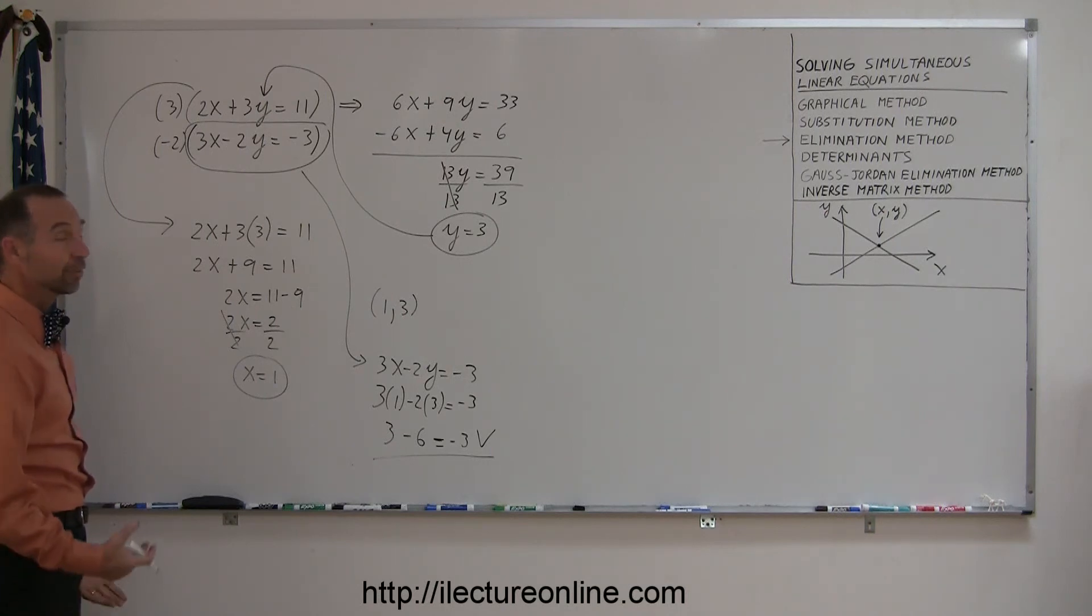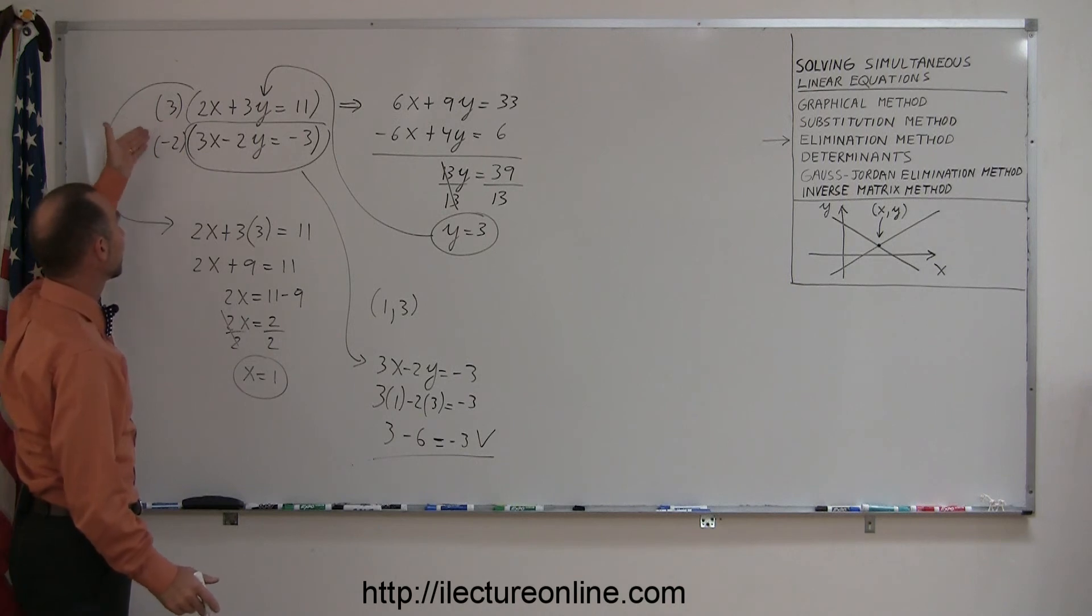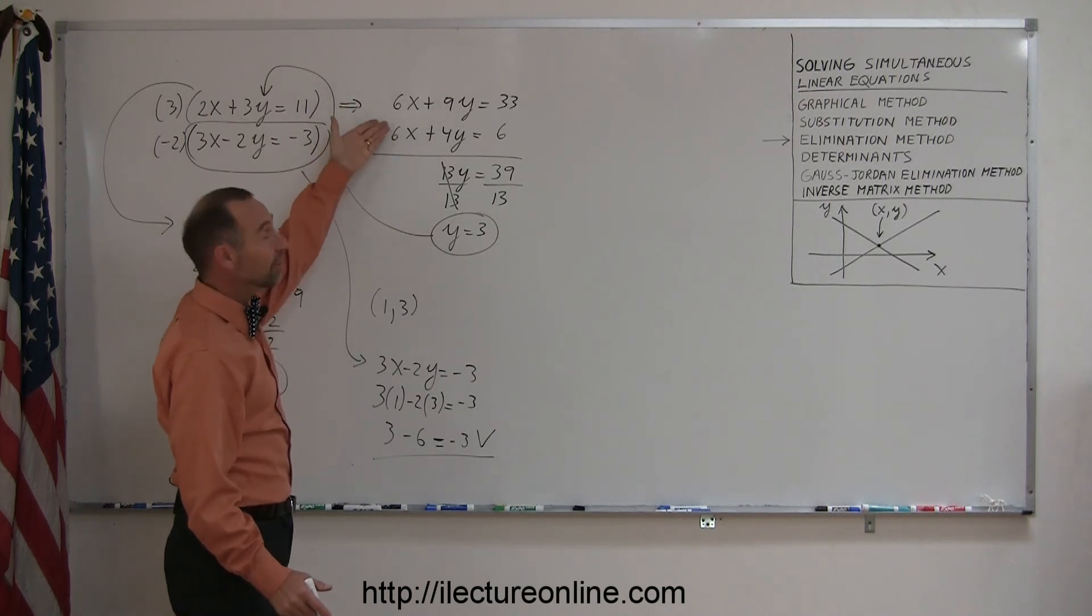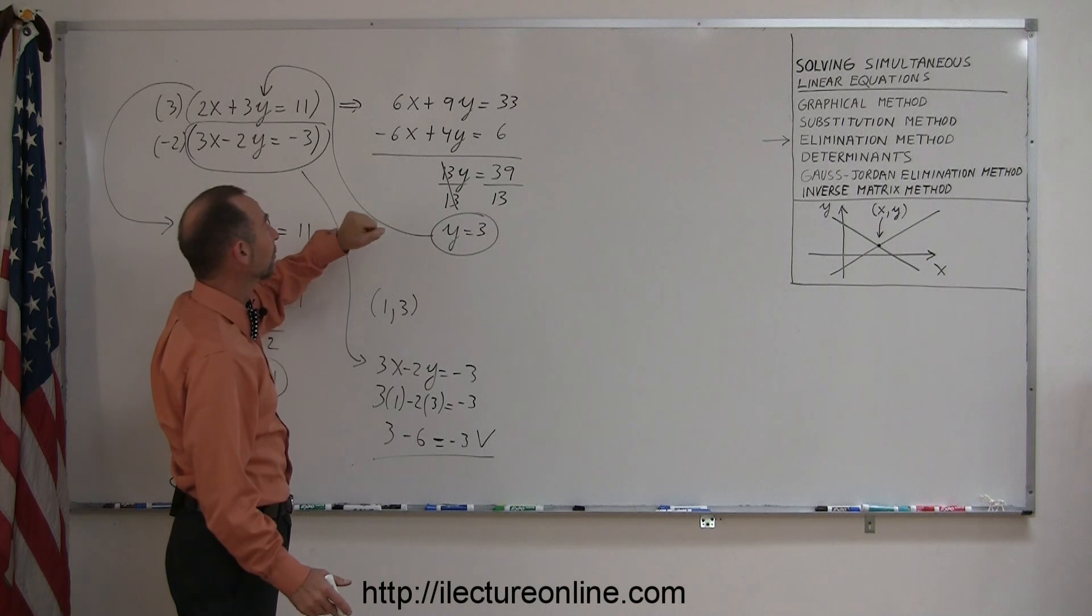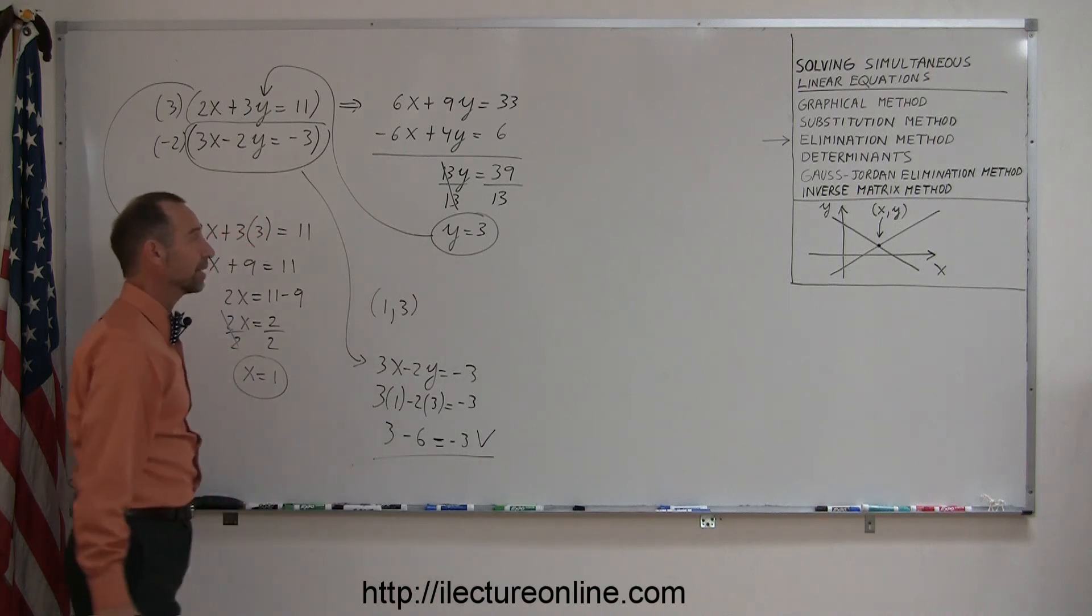So here's some good examples of how to use the method of elimination to solve simultaneous linear equations. As you can see, sometimes it's not straightforward. You'll have to multiply both equations by some number to make one of the variables have the same coefficient, either opposite in sign or the same in sign. If they're opposite in sign, you can add them to eliminate the variable. If they're the same in sign, then you can subtract the two equations to eliminate the variable and you get the exact same result.